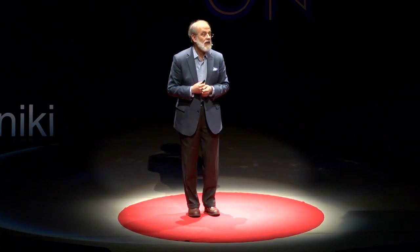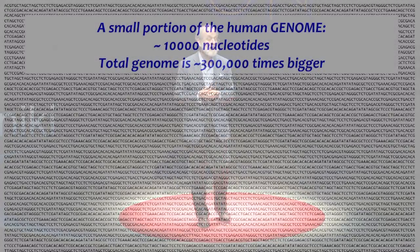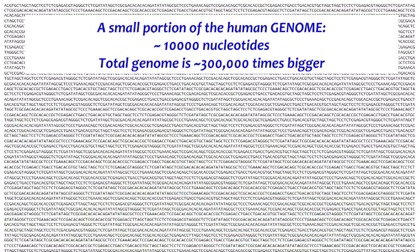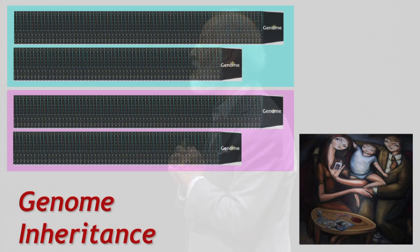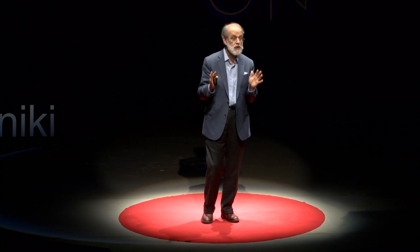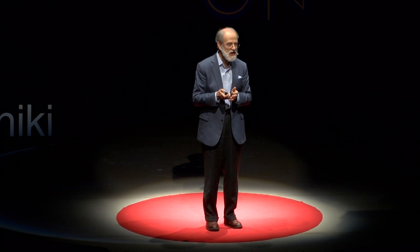Here is a portion of my genome — about 10,000 letters or nucleotides. The genome is a long text written by four letters: A, C, G, and T. It is 300 times longer than this, for a total of 3 billion letters. Each one of us has a 3-billion-letter genome from his father and a 3-billion-letter genome from his mother, so each one of us has two copies of a complete genome.